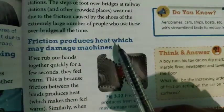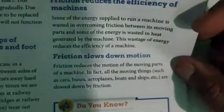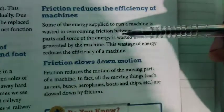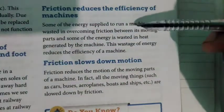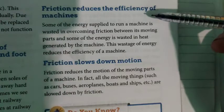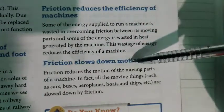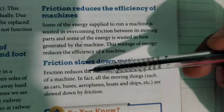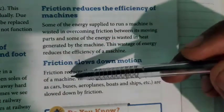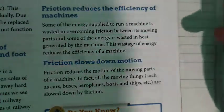Friction also reduces the efficiency of machines. If friction is more, the machine will not work properly, which is why we use mobile oil or grease to reduce friction. Friction also slows down motion — whenever we apply a brake, it is the role of friction over the vehicle, and it slows down the motion of the vehicle.